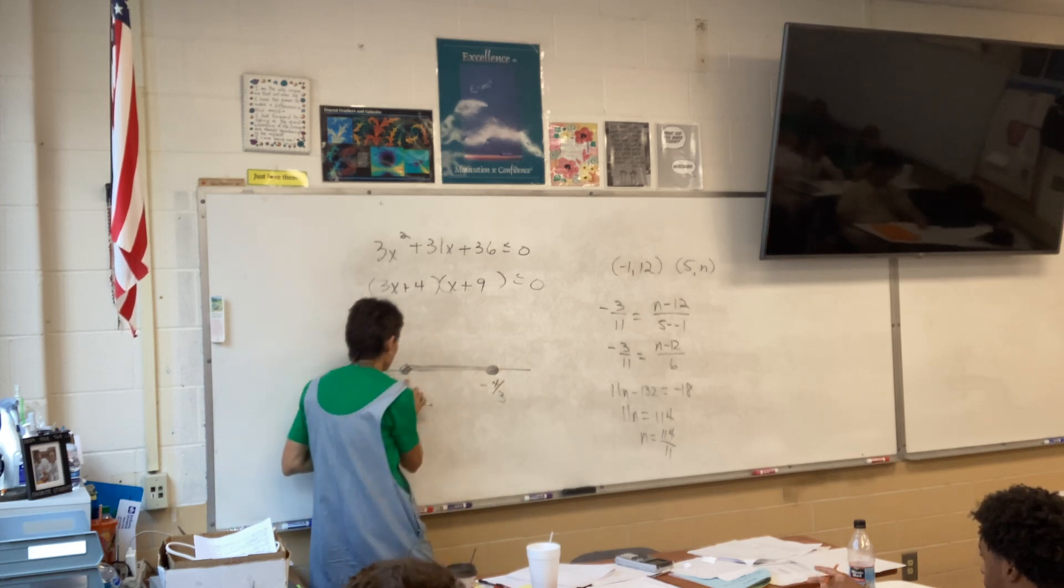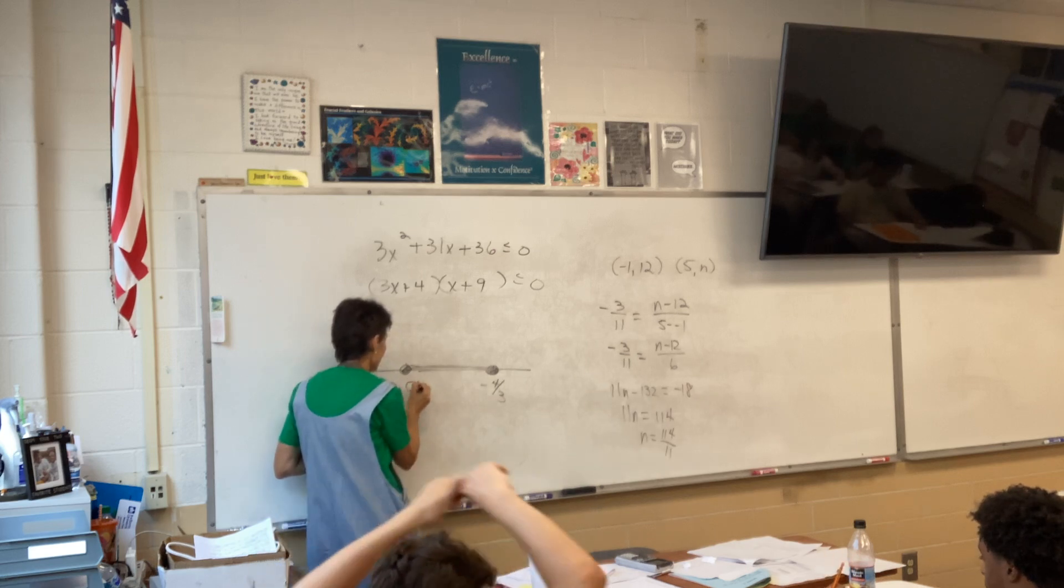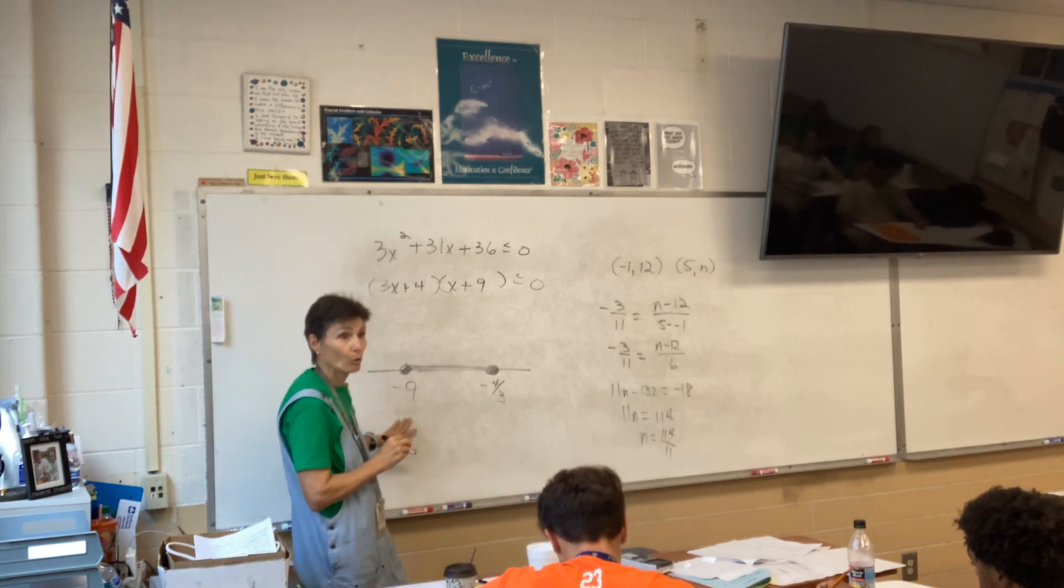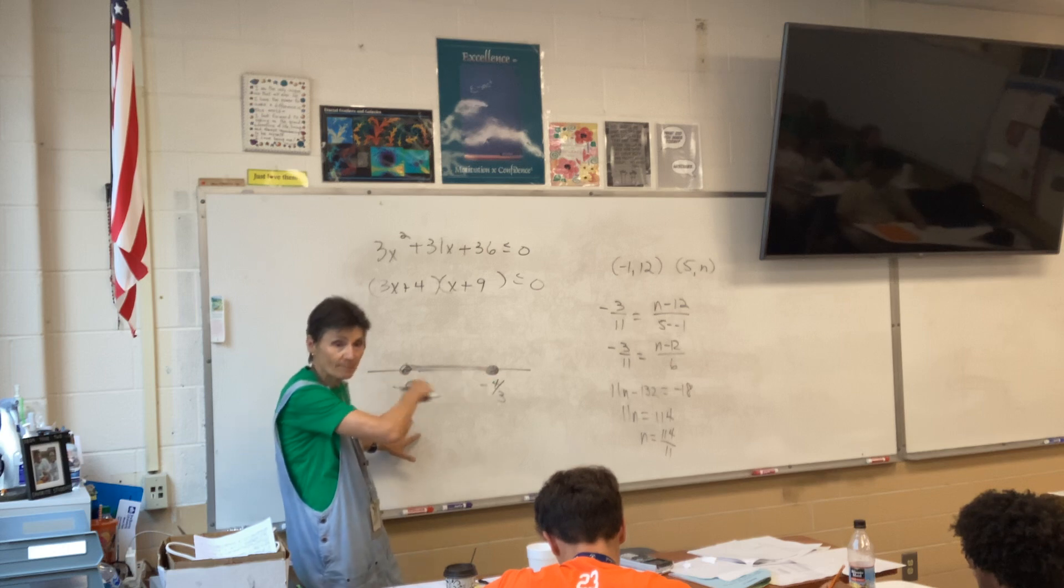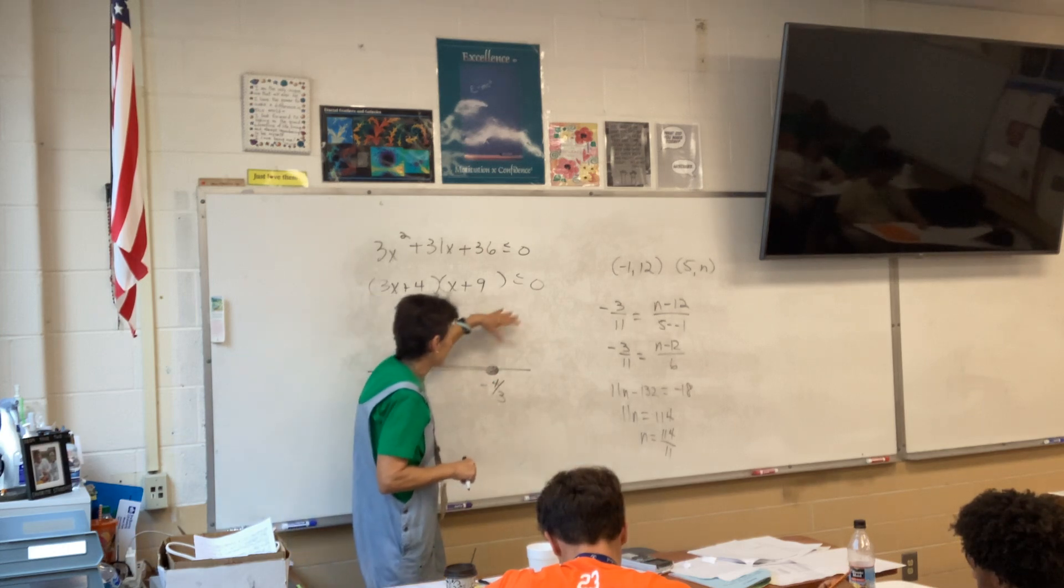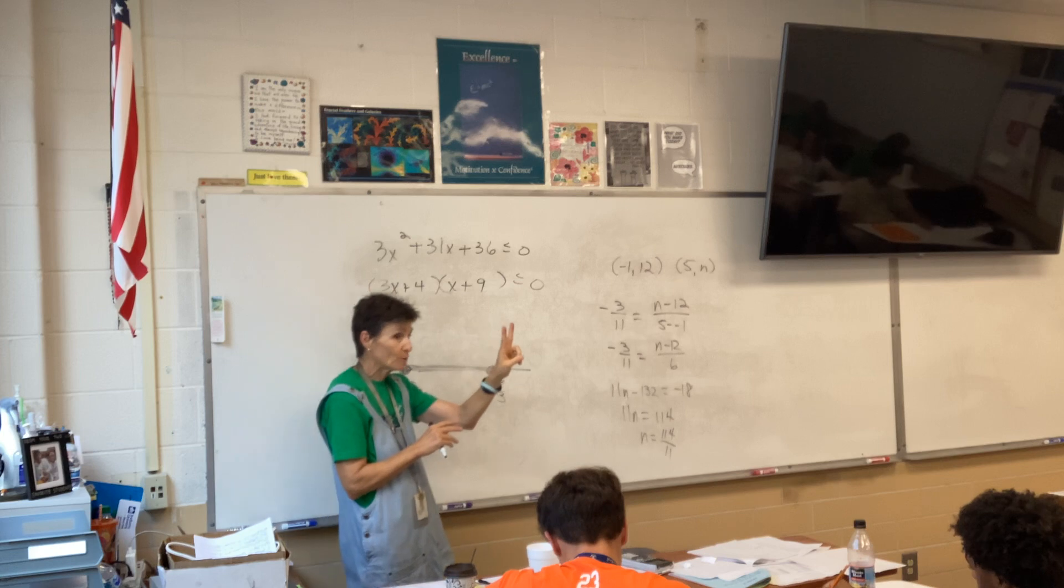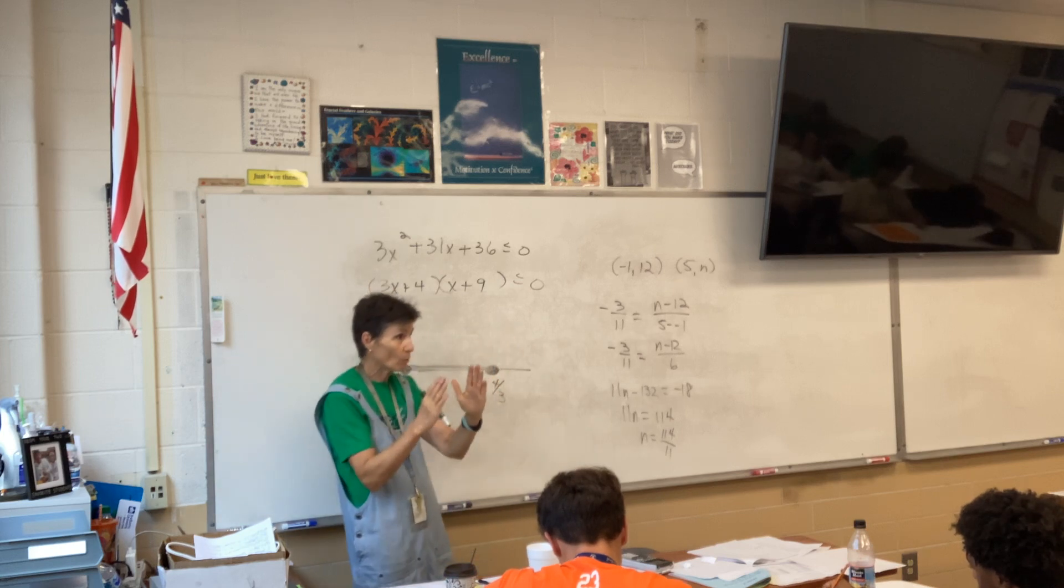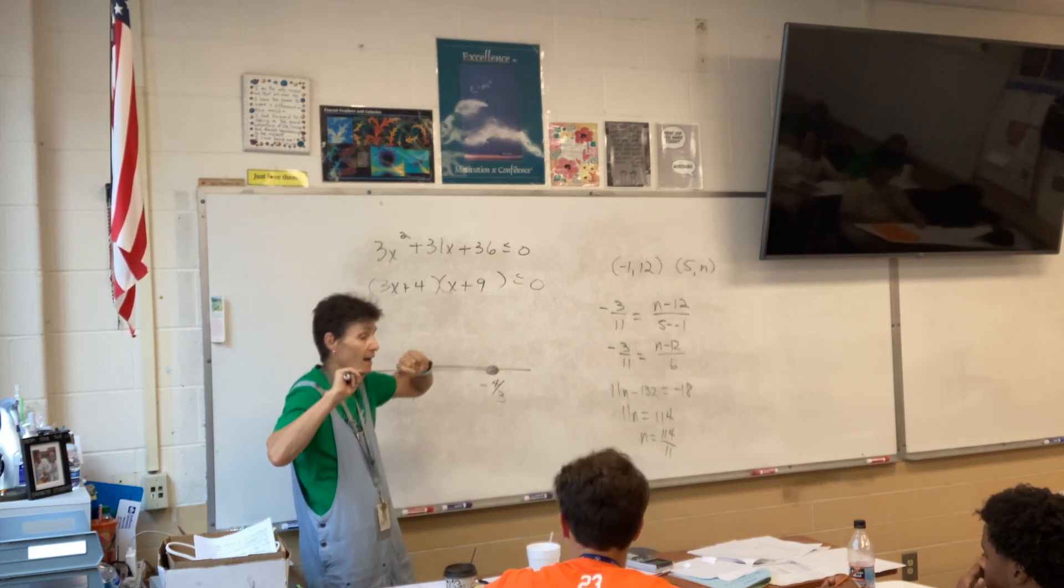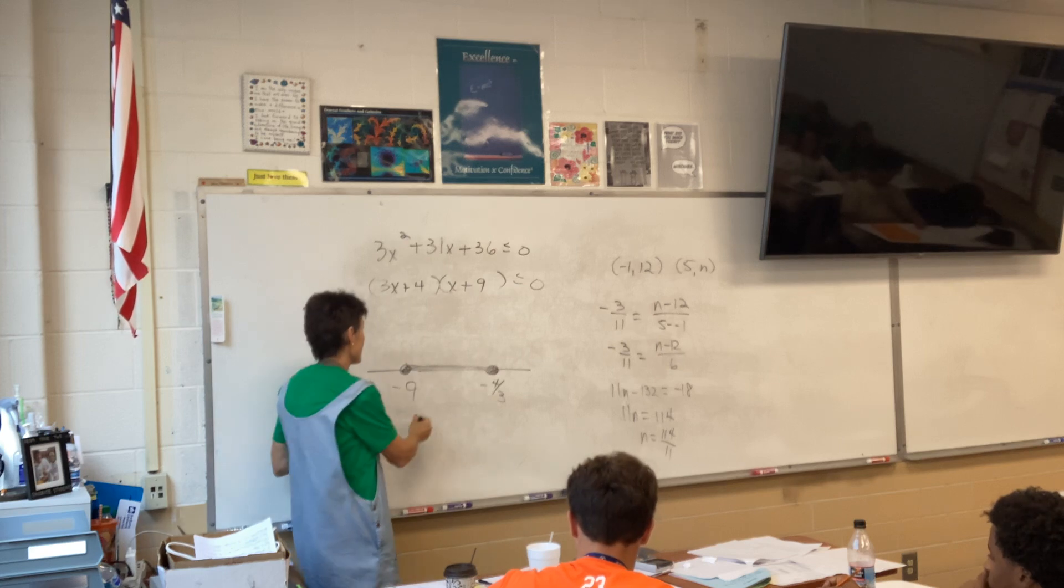So, the factors tell me that the dots are negative 4 thirds and negative 9. And I have to make sure they're in order. This is a number line. Since it's a less than, I shade in between, right? When you have two dots, in between or outside, depending on the sign.